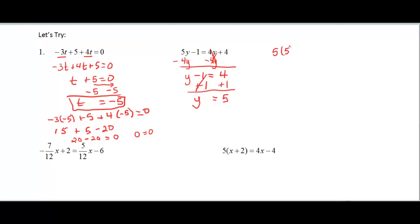5 times 5 minus 1 should be equal to 4 times 5 plus 4. 5 times 5 is 25 minus 1. And if I finish this side out, 25 minus 1 is 24. Going to the other side now, 5 times 4 is 20 plus 4, and 20 plus 4 is 24. 24 equal 24, so sure enough, y equal 5.